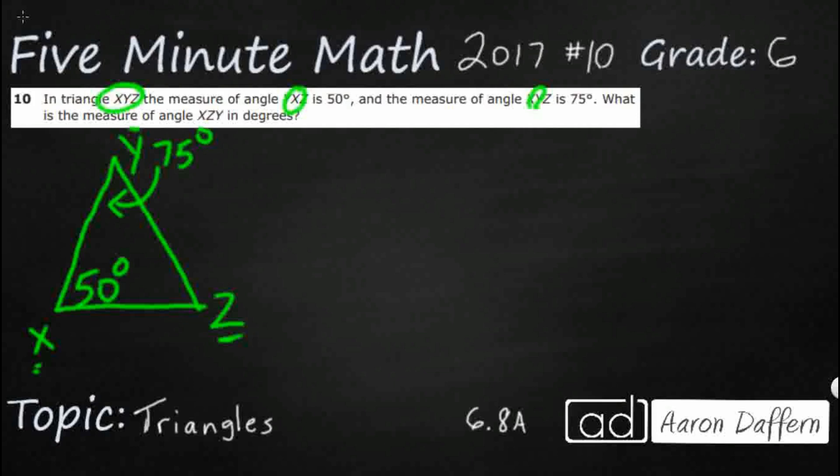So we've got a 50 degree angle. We've got a 75 degree angle. And then we need to find the measure of angle XZY. And it doesn't really matter if they say X, Z, Y, or Y, Z, X. It's just that middle letter right here that gives us our angle. So this is what we're looking for, X, Z, Y. But that is all the information that they give us.